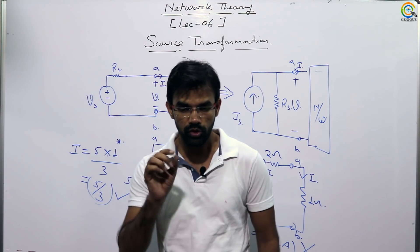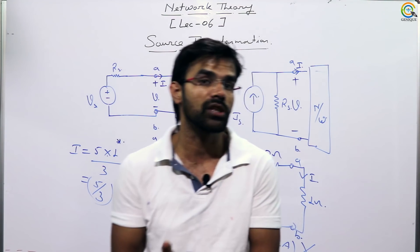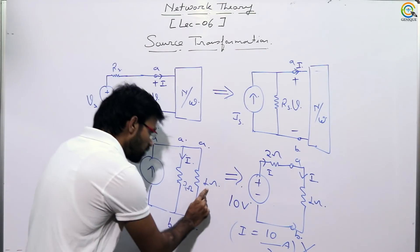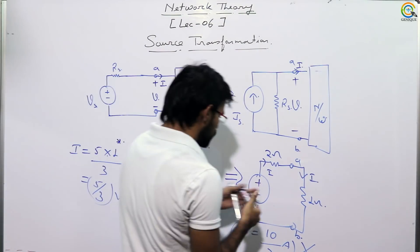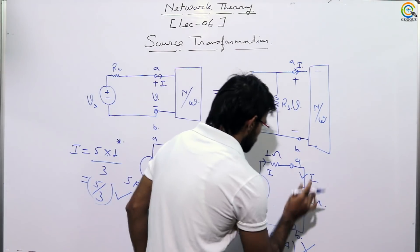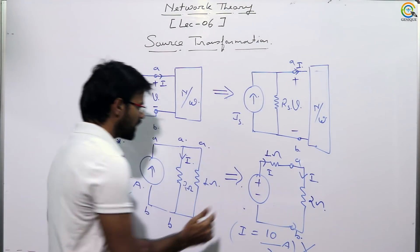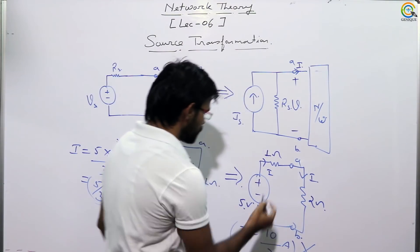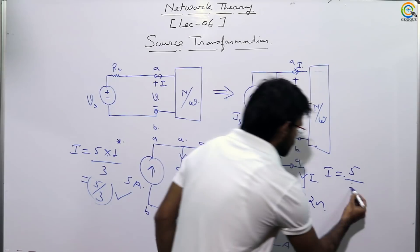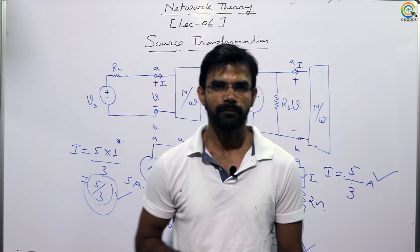Source transformation must be applied carefully — only to the relevant part of the circuit. The response element should not be included in the transformed portion. In this example, the 1-ohm resistor is present, the 2-ohm is here, and with a voltage of 5 and 1-ohm in series, the correct current result is 5/3 ampere after applying source transformation correctly.